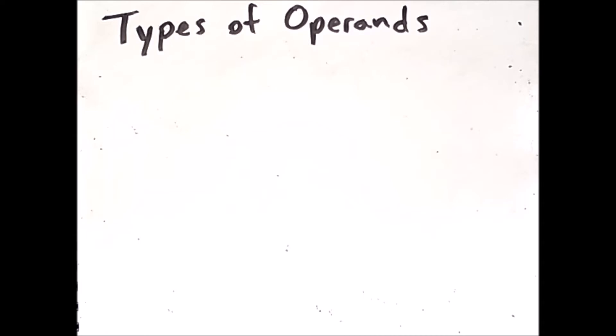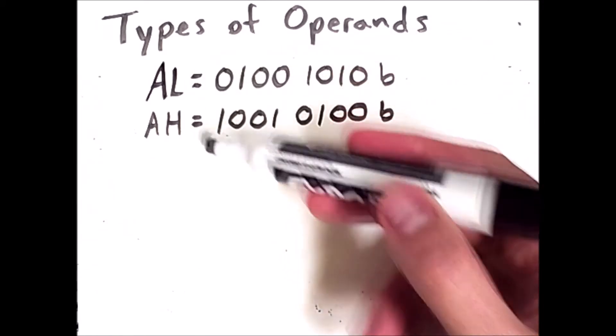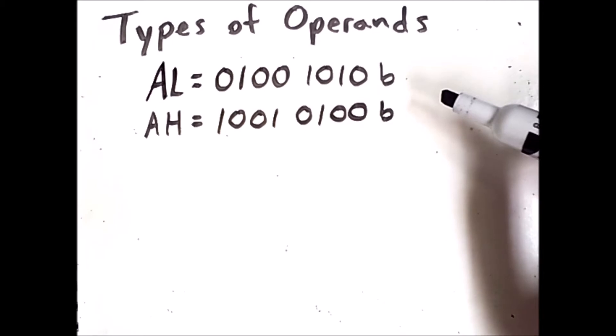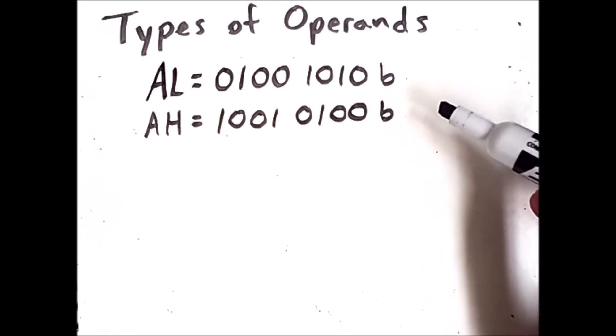With machine and assembly instructions, each instruction will interpret the bits of an operand depending on what the instruction is. Take these two registers for example. AL and AH hold these 8-bit values. In binary, we see the zeros and ones that make up the contents.